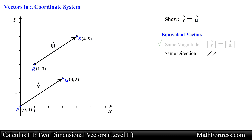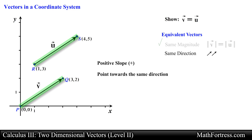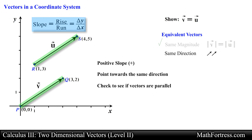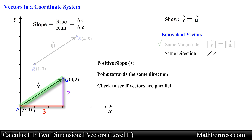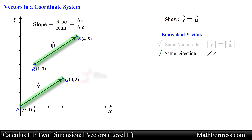Now we need to make sure that both vectors have the same direction. Taking a look at the vectors, we see they both have a positive slope and seem to be pointing in the same direction. To confirm, we calculate the rise over the run for each vector. Vector v has a rise of 2 and a run of 3; likewise, vector u has a rise of 2 and a run of 3. Both vectors have the same slope and are pointing in the same direction, so all conditions for vector equivalency have been satisfied — we can conclude these two vectors are equivalent.